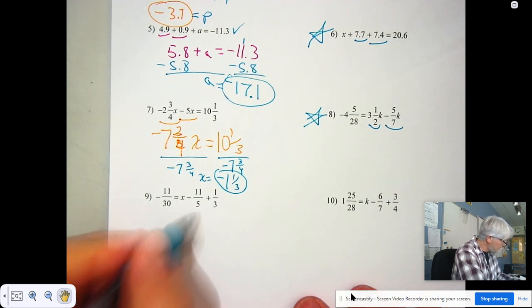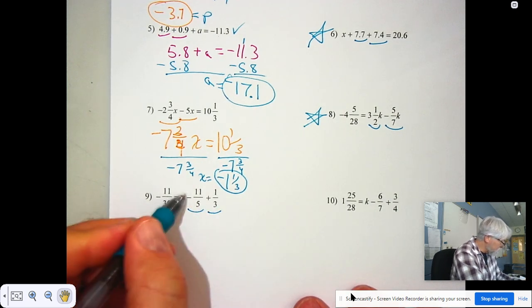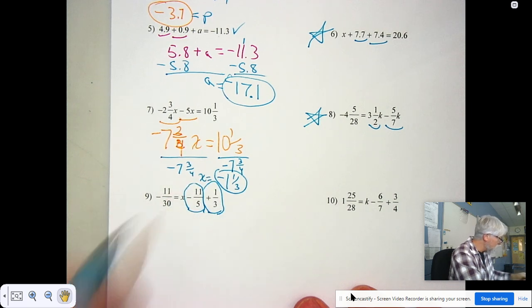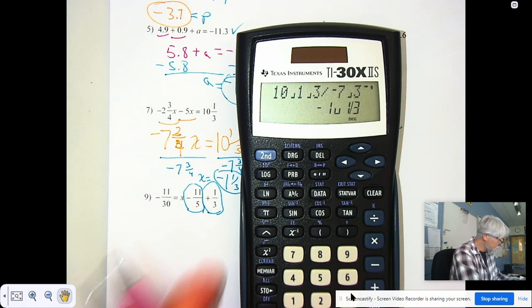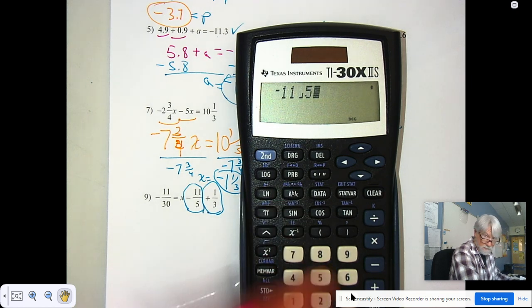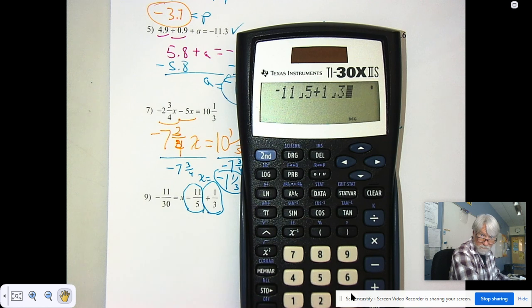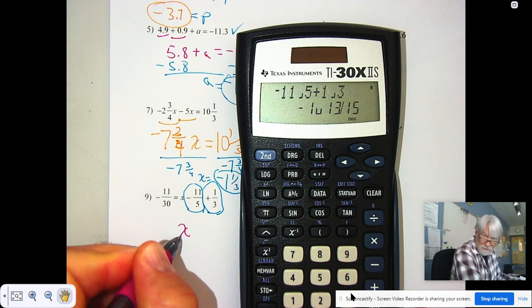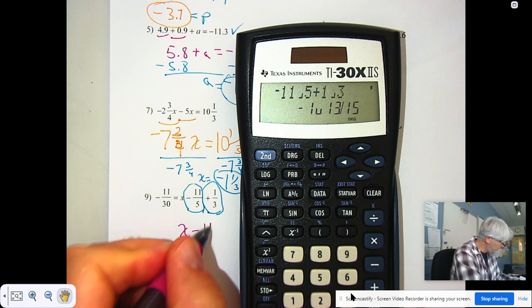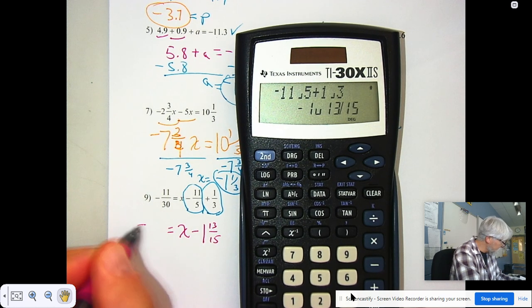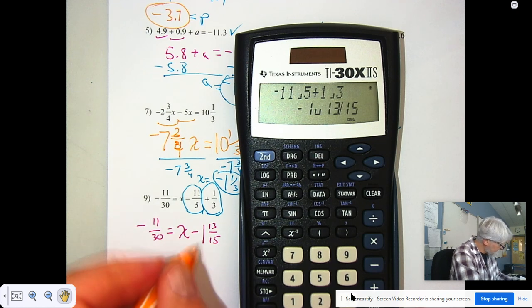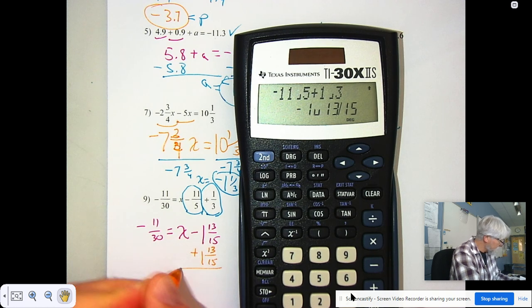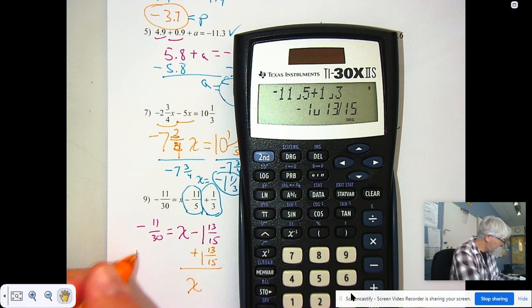Number 9. Negative 11 fifths plus 1 third. You can use your calculator. Whatever helps. Negative 11 fifths plus 1 third equals. So this is going to be x minus 1 and 13 fifteenths. That's what equals negative 11 thirtieths. So now if I add 1 and 13 fifteenths, I get x.